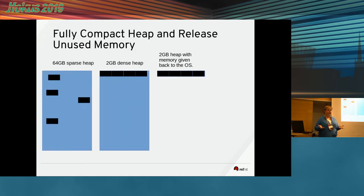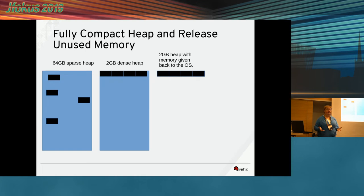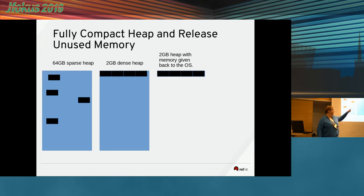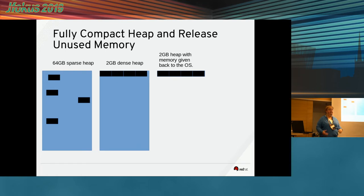For example, if you're writing everything out to memory, maybe you want to do a compaction of the heap. You can give the memory back to the OS. So rather than a 64-gigabyte sparse heap full of garbage, you've now got two gigabytes of densely used memory. Maybe you want to write that out when you checkpoint it, and then when you restore it, you can allocate the extra space you need. But you're not paying the price of writing all that out to disk or sending it over the network to where you want to bring it back up.